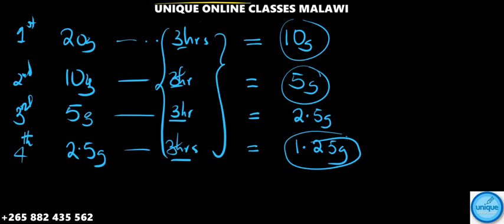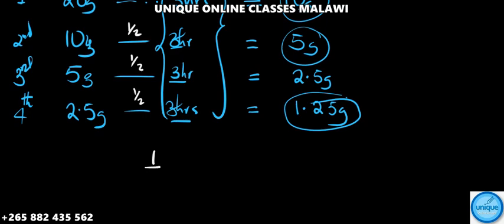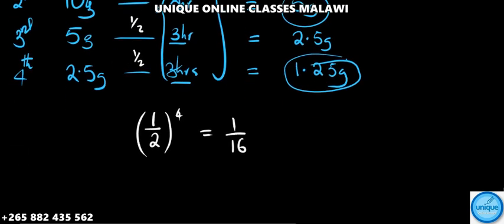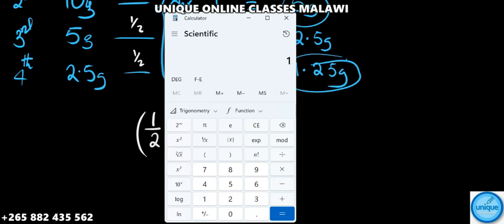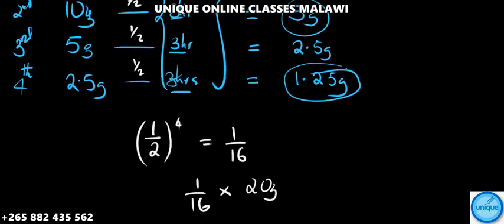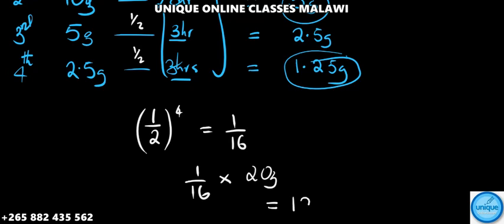You can see we're counting the halves: half, then half, then half, then half - that's 4 half-lives total. This gives us 1 over 16. To find the final mass after 4 half-lives, calculate 1 over 16 multiplied by the initial mass of 20 grams, which equals 1.25 grams.